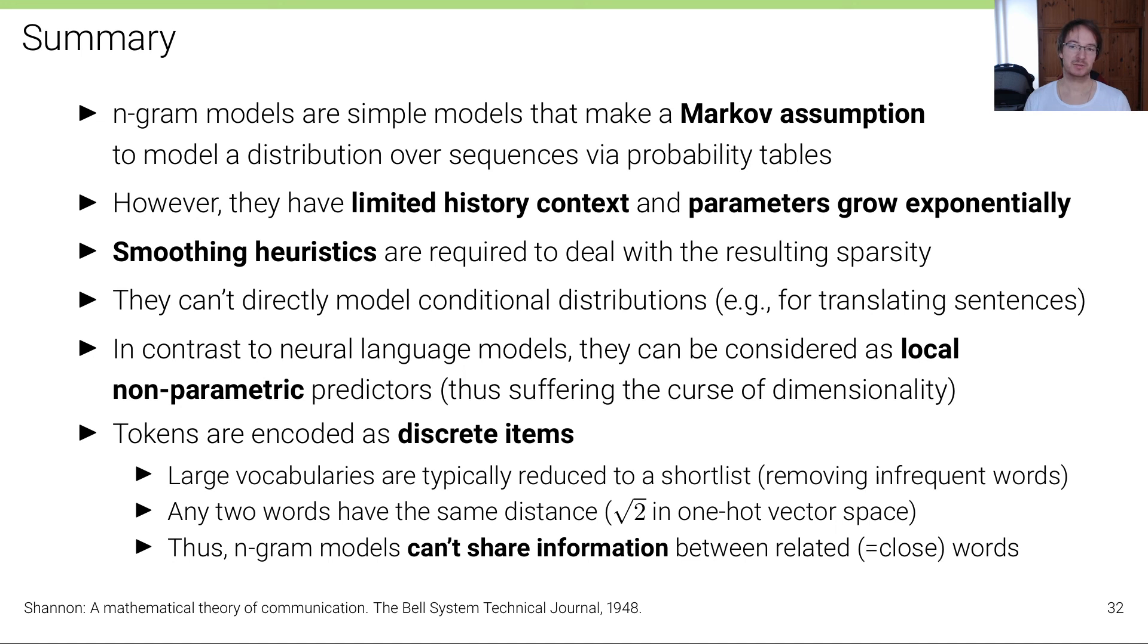One of the main downsides of these type of language models that people have realized in the 2000s, and where a lot of innovation and boost in performance came from, is that in these type of models tokens are encoded as discrete items. One downside of this is - and this is still a problem - that large vocabularies are typically reduced to a shortlist, so from all possible English words we need to remove all except maybe the 30,000 most frequent ones in order to have a fixed vocabulary of size 30,000 that doesn't become too difficult to predict and to store parameters for.